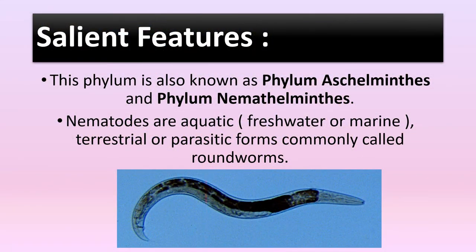This phylum is also known as phylum Aschelminthes and phylum Nemathelminthes. Nematodes are aquatic, terrestrial, or parasitic forms commonly called roundworms. When they are aquatic, they can be both freshwater or marine.